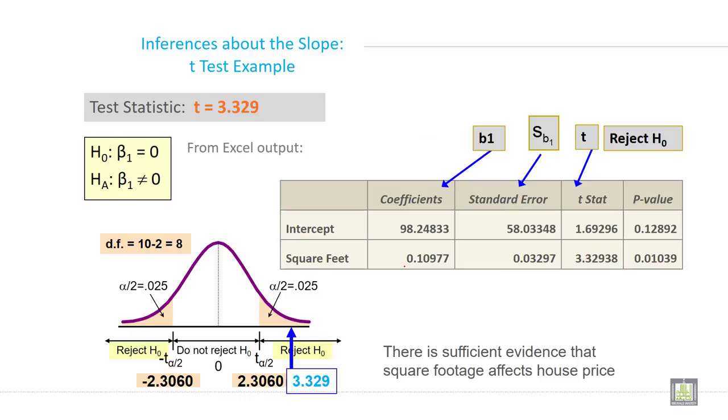So the T statistic is 3.329. From Excel output, just take intercept and square feet. So this is the value of B1, and this is SB1 value, and this is T statistic, and this is the P value.